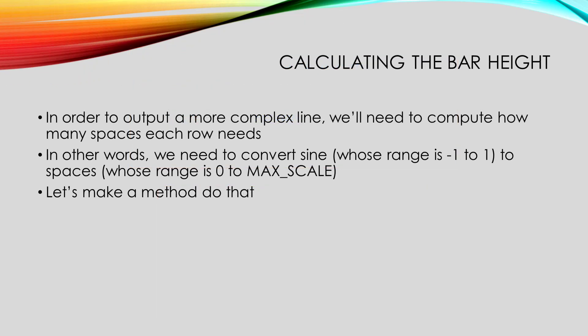The only thing left to do is to figure out how to use the sine function where we were using h. Our trouble is that the sine function has a range of negative 1 to 1, but we want the number of spaces to be between 0 and max scale. So let's make a method to compute the number of spaces that are appropriate for a particular sine value. Essentially, we need to take a real number between negative 1 and 1, and convert it to a number of spaces between 0 and max scale.